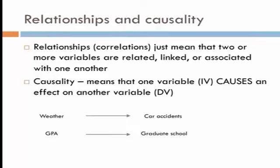The dependent variable is dependent on changes in the independent variable. So the dependent variables in these examples are car accidents and graduate school admission. What we're saying is that changes in weather can cause car accidents, and changes in GPA affect whether or not somebody is admitted to graduate school.